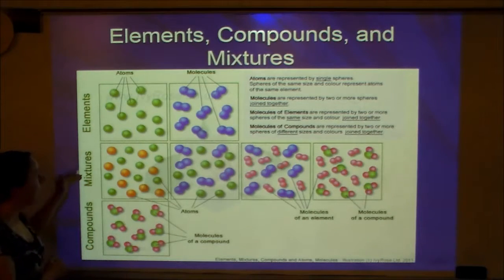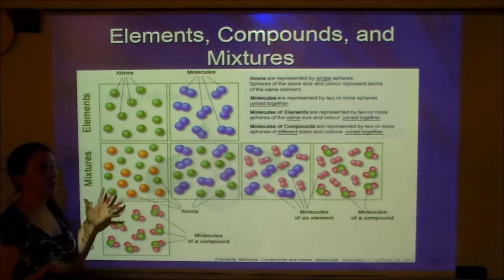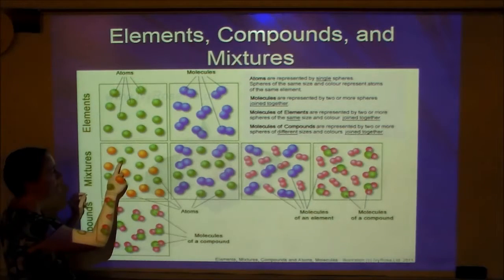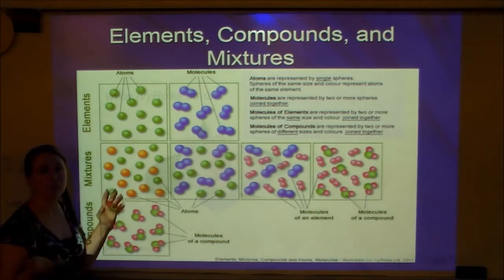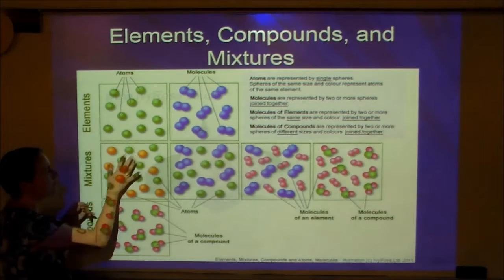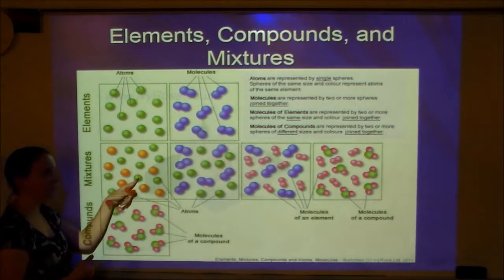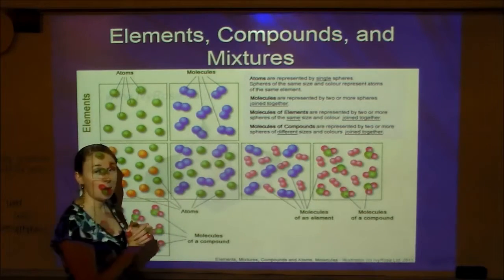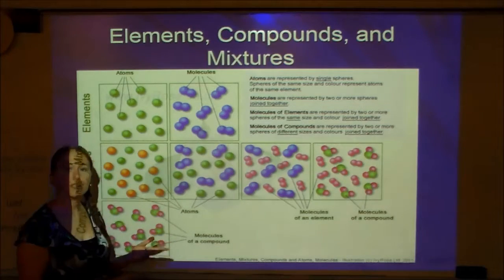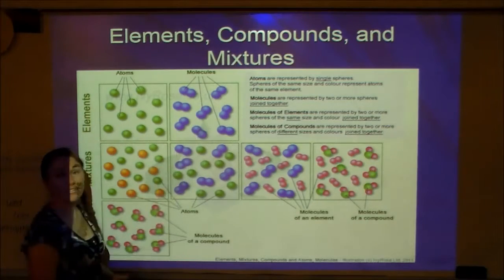Mixtures have different types of particles. If I have some green and some orange atoms mixed together, that's a mixture of atoms. If I have some green atoms and some blue molecules mixed together — the green ones are alone so they're atoms, but the blue ones are bonded so they're molecules — that would be a mixture of those two elements.